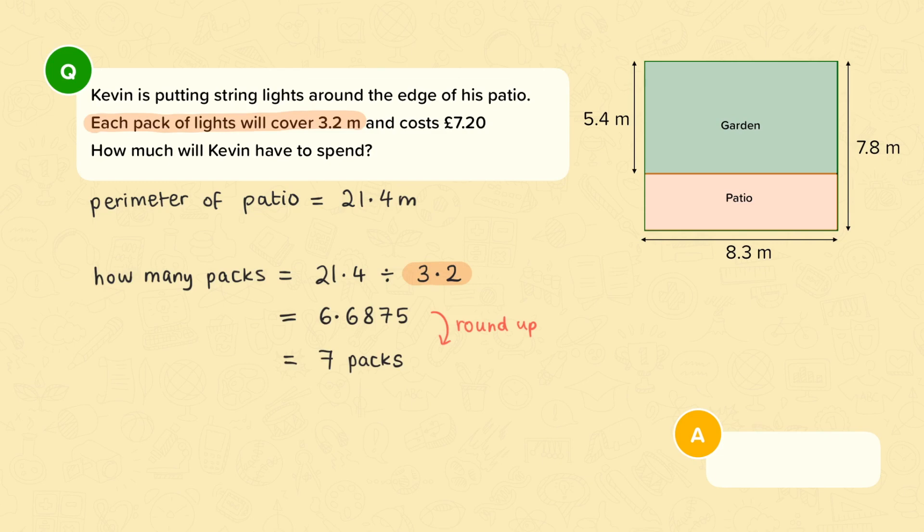So now we're almost done with the question. We know that 7 packs of lights are needed. We also know that each pack costs £7.20. Therefore we need to work out 7 times £7.20. And that will tell us how much Kevin has to spend. If you work this out on a calculator, you will get an answer of 50.4.